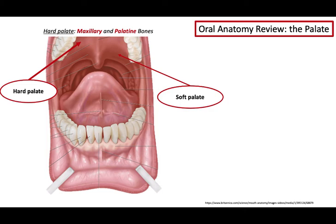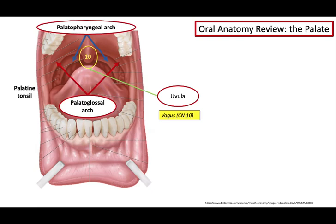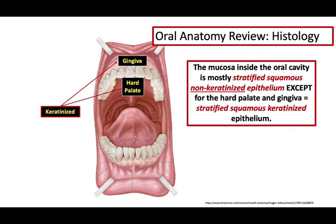The anterior palate is the hard palate, formed via the fusion of maxillary and palatine bones beneath the mucosa. The posterior aspect is the soft palate. The more anterior arch of the soft palate is the palatoglossal arch; the posterior arch is the palatopharyngeal arch. Sitting between the two arches is the palatine tonsil, consisting of lymphoid tissue. The uvula, in the midline, is innervated by the vagus nerve, cranial nerve 10. Behind the palatopharyngeal arch and uvula is the opening to the oropharynx, a shared passageway for both food and air. The epithelium inside the oral cavity is stratified squamous non-keratinized epithelium, except for the hard palate and gingiva, which are keratinized.